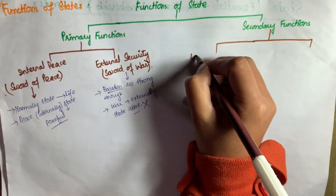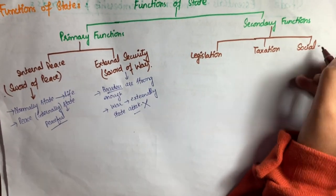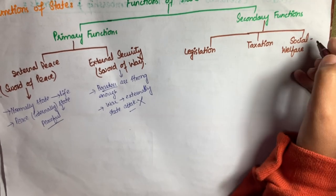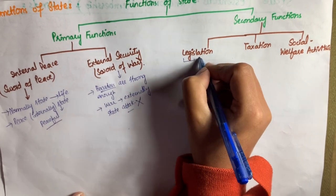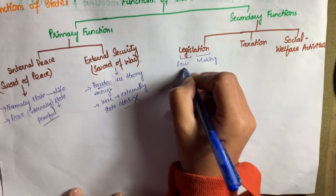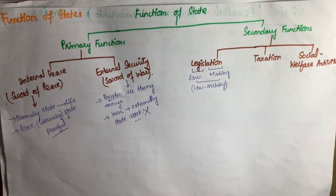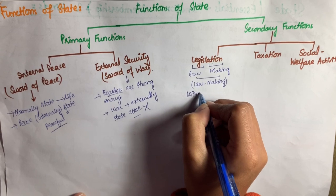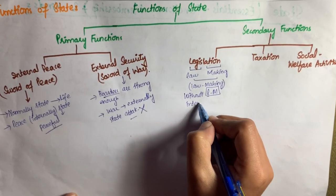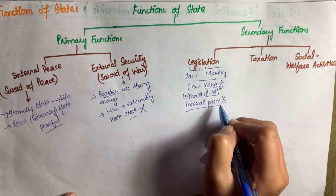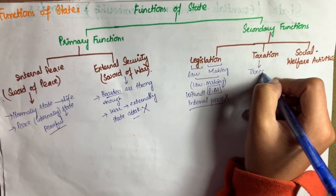Moving towards secondary functions of state, there are three main secondary functions: number one, legislation; number two, taxation; and number three, social welfare activities. The word legislation is derived from two words — 'legis' meaning law and 'lation' meaning making — so legislation means law-making. Without law-making, internal peace in the state is impossible.